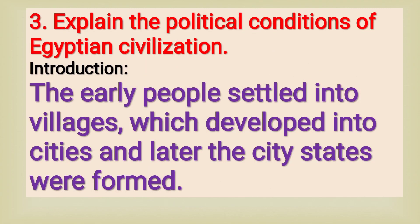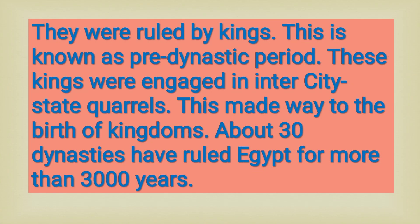Question number 3: Explain the political conditions of Egyptian civilization. Introduction: The early people of Egypt settled into villages which developed into cities, and later city-states were formed. These city-states led to the beginning of the political system in Egypt. They were ruled by kings — this is known as the pre-dynastic period.